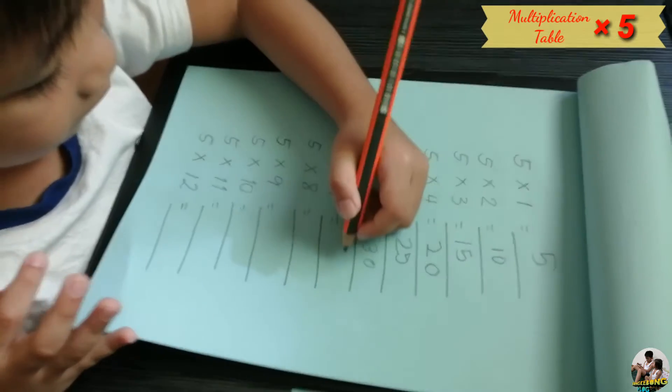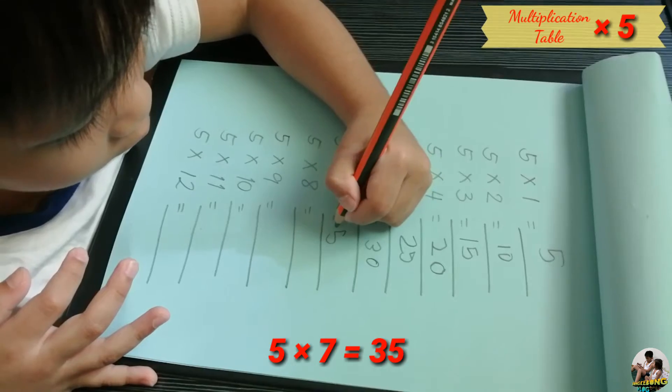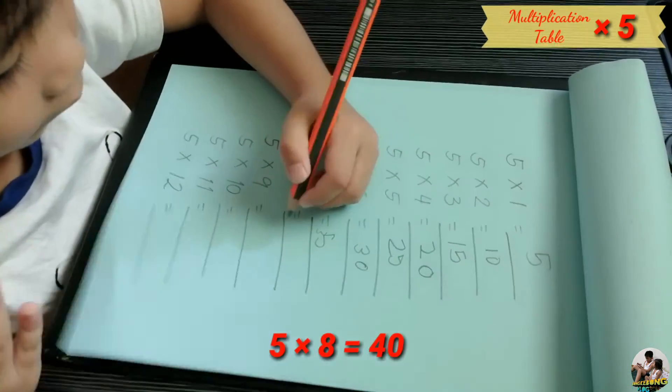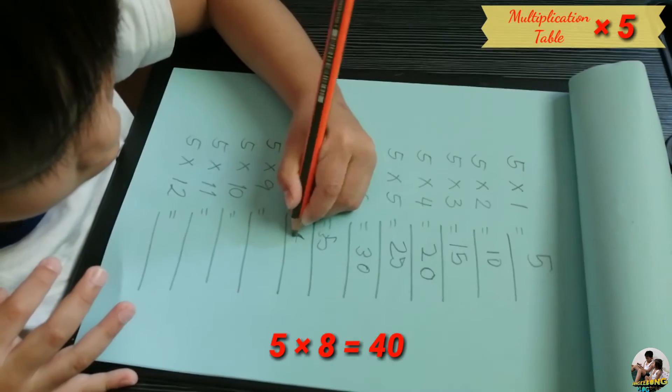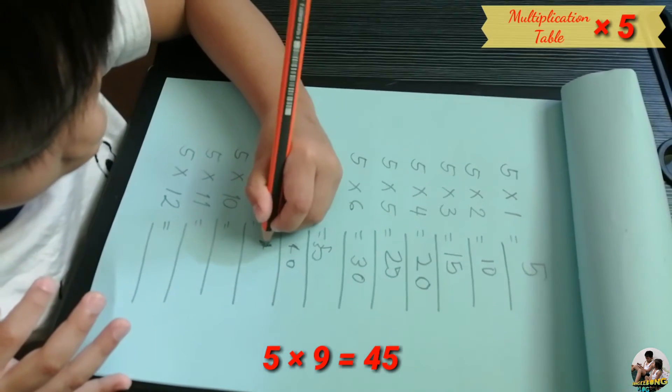Five times seven equals thirty-five. Five times eight equals forty. And five times nine equals forty-five.